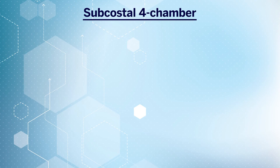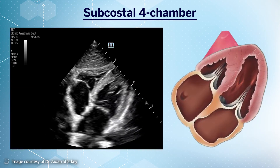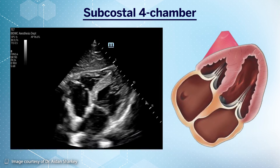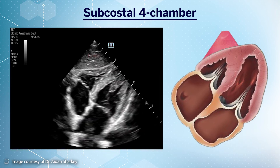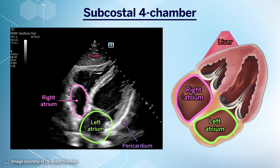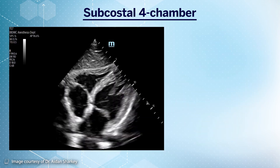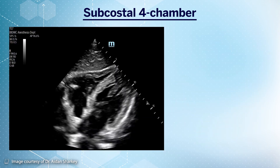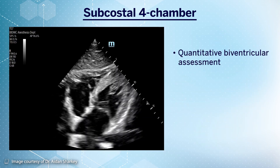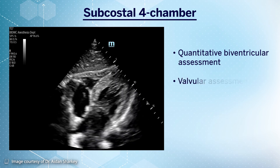The standard view in this window should appear as depicted in this video loop and cartoon representation, where we should be able to identify the liver, the pericardium, along with the two atria and two ventricles of the heart. This view is similar to the apical four-chamber view in its ability to grossly assess biventricular function, along with some advanced uses such as valvular assessment.